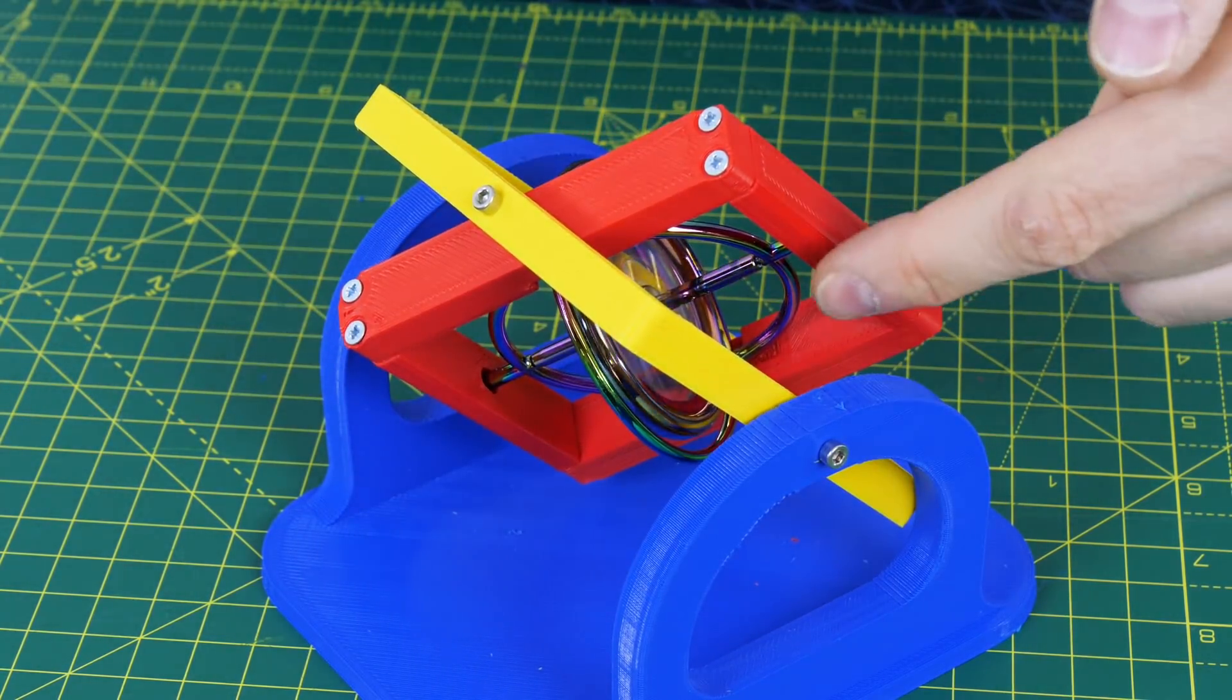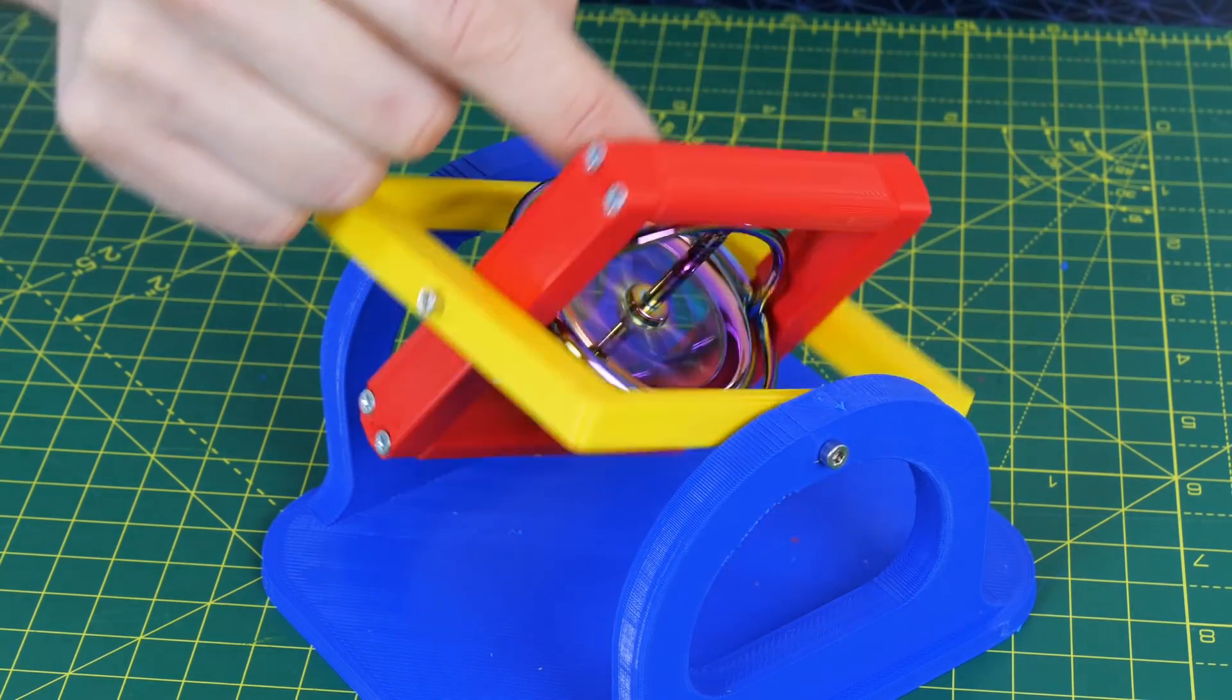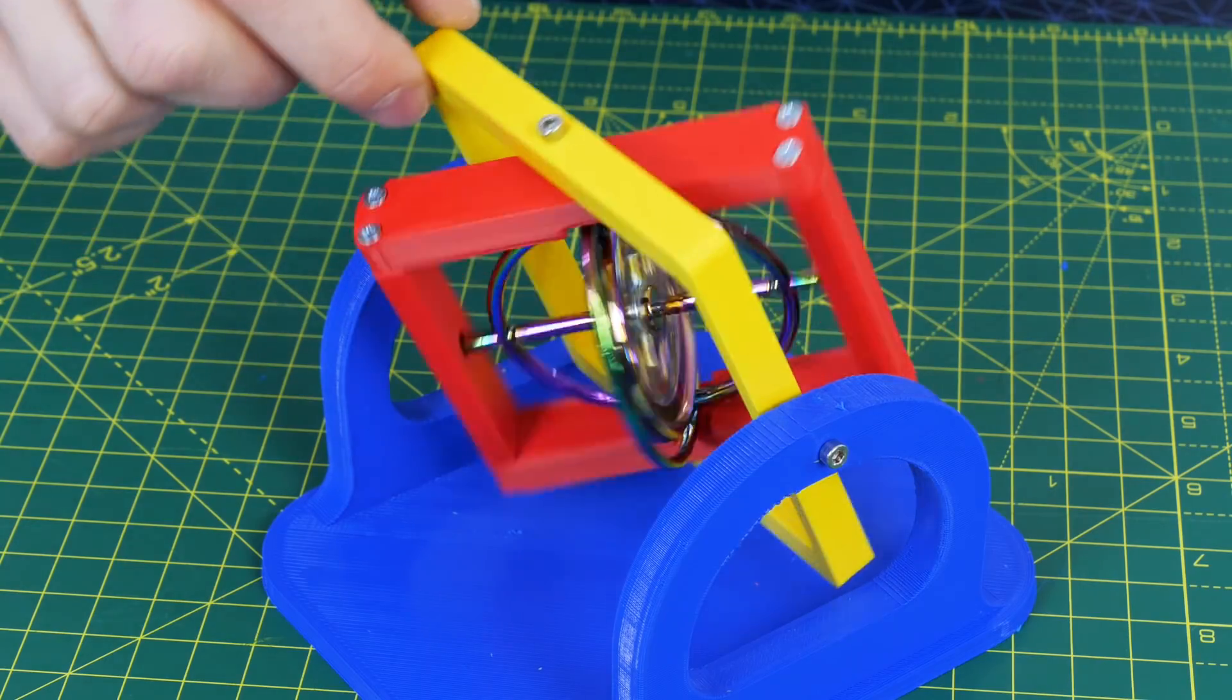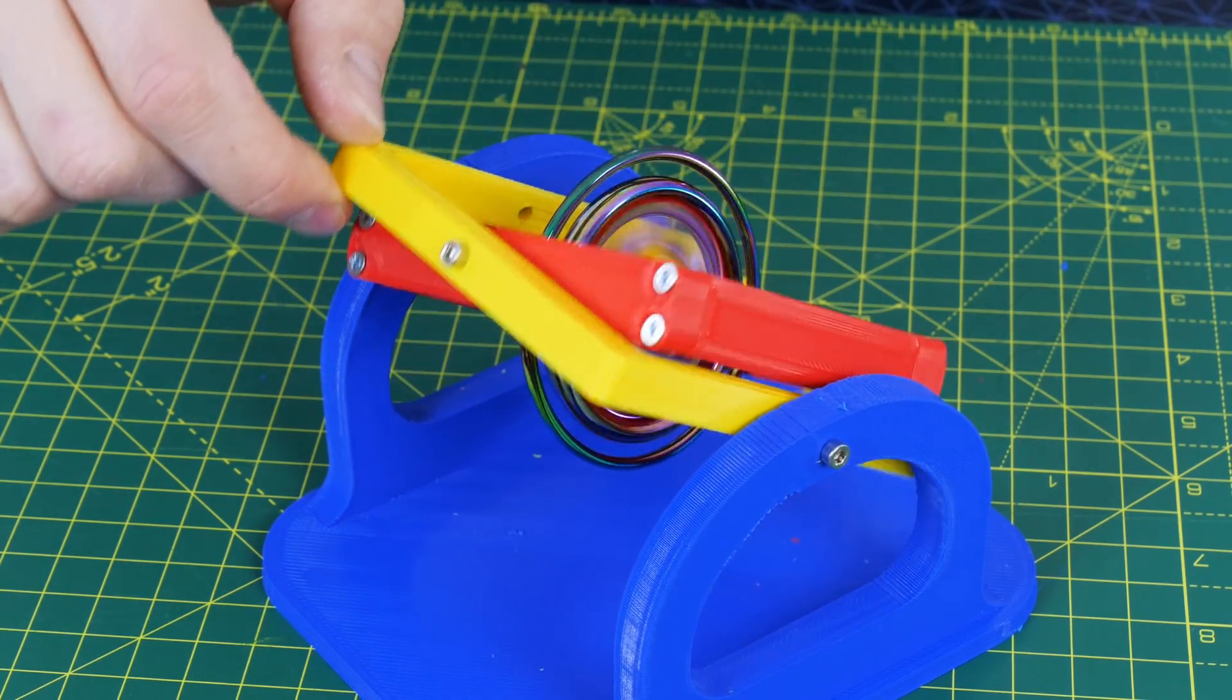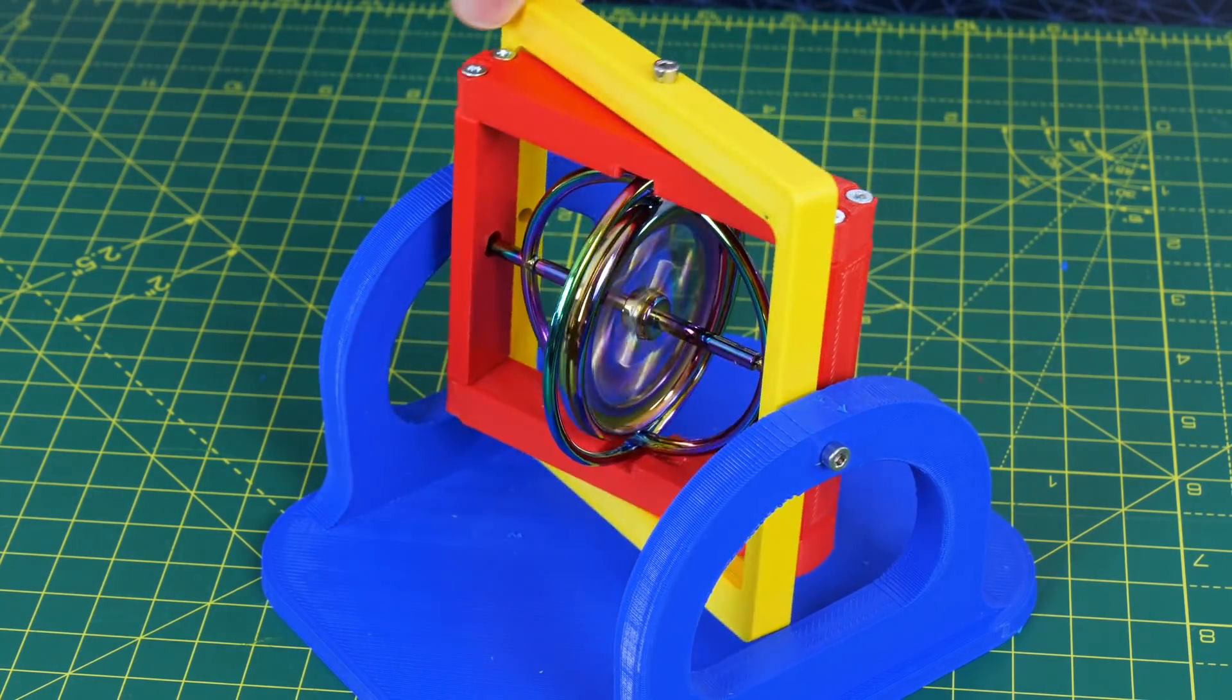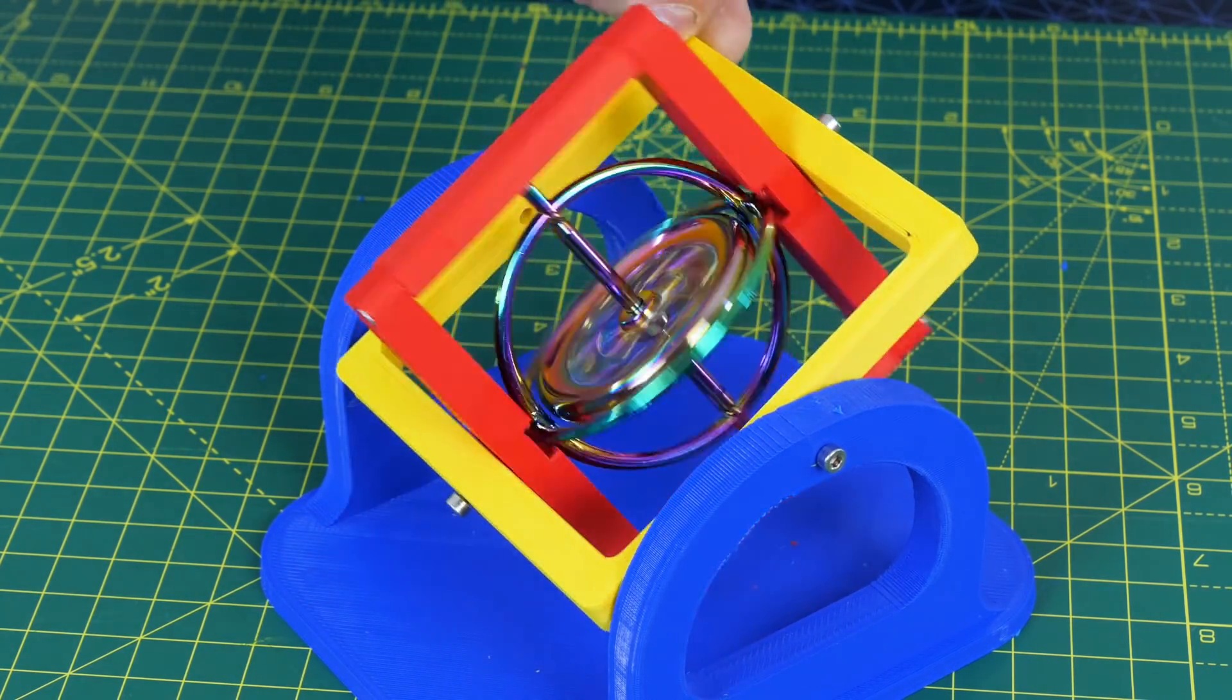This of course works the other way round as well if I move the red axis then we can see the yellow axis moving in a perpendicular direction. However our gyro can also creep which means if we force it to another angle it still works and it doesn't know which way up is.